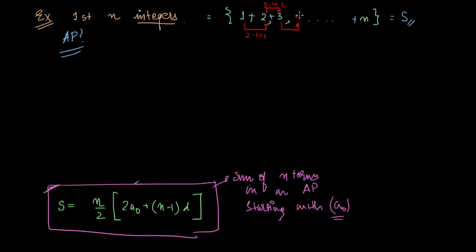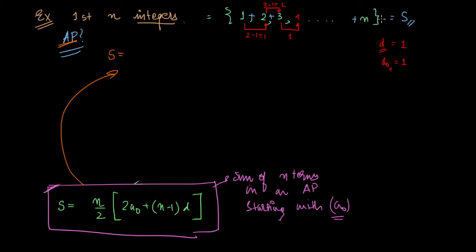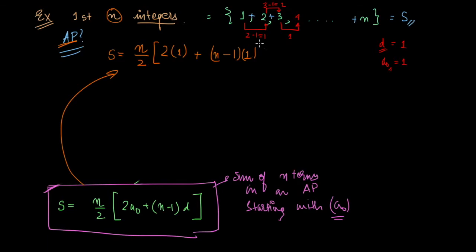The common difference holds throughout, so d = 1. The AP starts from 1, so a₀ = 1. Having confirmed it is an AP, we apply the formula with n terms: S = (n/2) × [2 × a₀ + (n−1) × d] = (n/2) × [2 × 1 + (n−1) × 1].